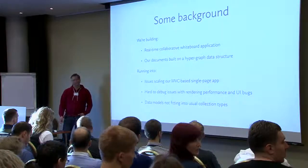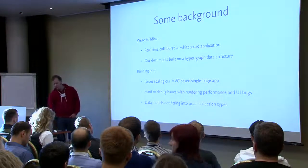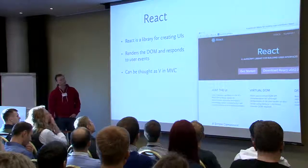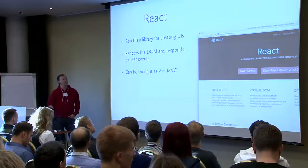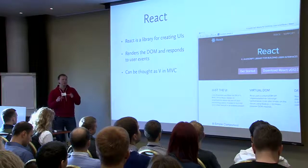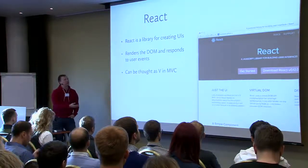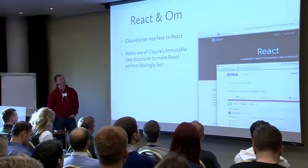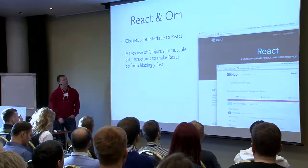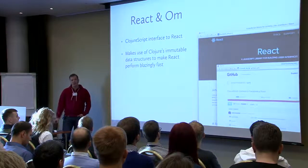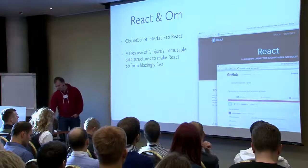So I went looking for a solution and tried a lot of different frameworks, big and small libraries. Finally I found Facebook's React library. It's meant for creating UIs — React manages the DOM for you and responds to user events. You can think of it as the view and view controller bound together. It didn't really click for me until I found David Nolan's OM framework — a ClojureScript interface to React. What's interesting is David made use of ClojureScript's immutable data structures to make React blazingly fast, the first framework to truly realize the best parts of React's rendering.